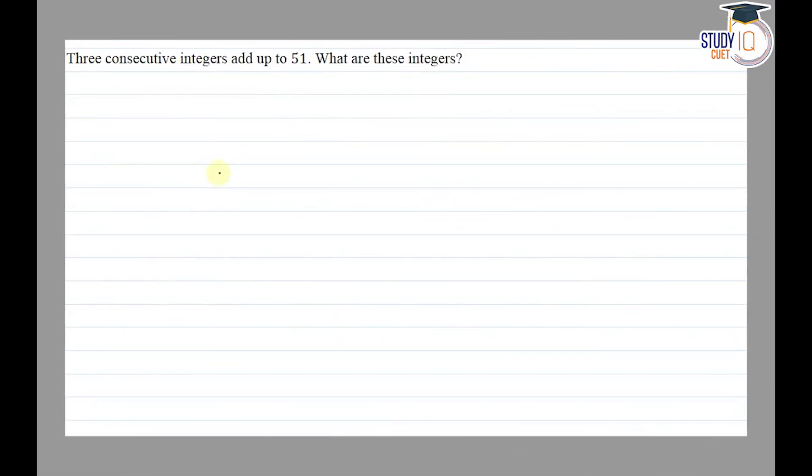Hello everyone, this question appears in the NCERT chapter on linear equations in one variable. This is question six of exercise 2.2. The question says that three consecutive integers add up to 51. What are these integers?